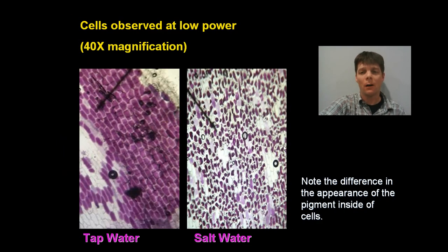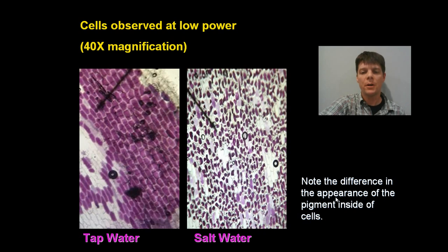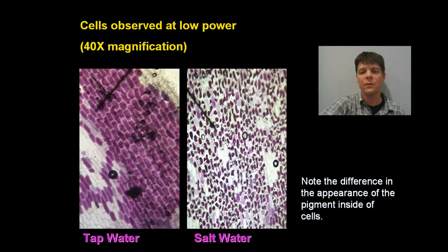So what we're looking at here are red onion cells. This is at 40 times magnification — that's low power. This is from a wet mount slide that was prepared using just normal tap water. Here we're seeing red onion cells, but now the wet mount slide was prepared using a concentrated salt water solution. Note that there's really a big difference in the appearance of the pigment on the inside of the cells here versus here, and during this video we're going to be talking about how osmosis can help us to explain these differences.